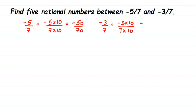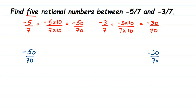Always take a greater multiplier because when you multiply, the gap between the two numbers becomes larger and you get more rational numbers. Now we have -50/70 and -30/70. Between these two numbers we have many numbers, starting from -49/70, then -48/70, and so on up to -31/70.